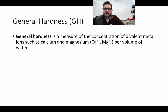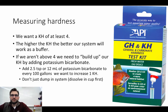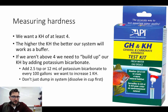General hardness is a measure of the concentration of calcium and magnesium. We're measuring hardness using an API general and carbonate hardness test kit. We want our carbonate hardness to be at least 4 — the higher the carbonate hardness, the better our system will work as a buffer. If we are not at 4, we want to build that up by adding potassium bicarbonate. Right now we aren't too worried about that: when we did our carbonate hardness test, we actually maxed out the chart on the API kit — more than 12 drops — so we are well above 214 parts per million of carbonate.